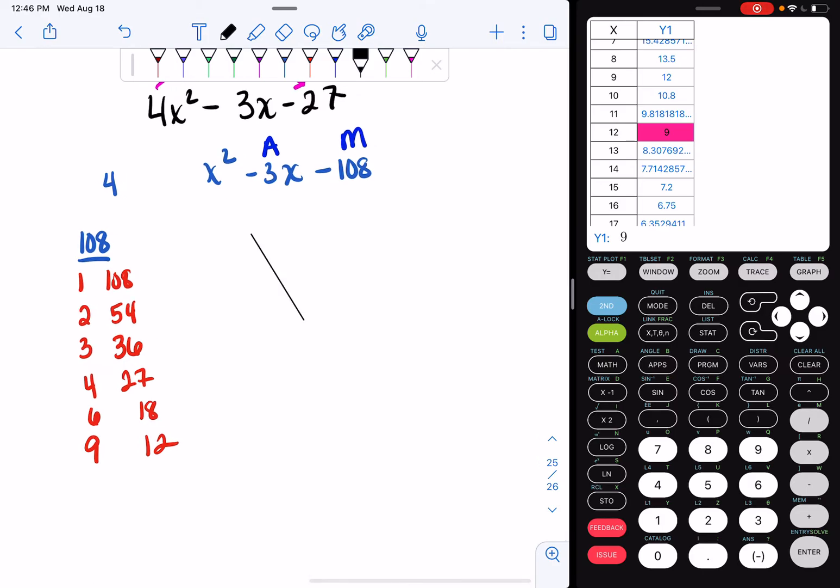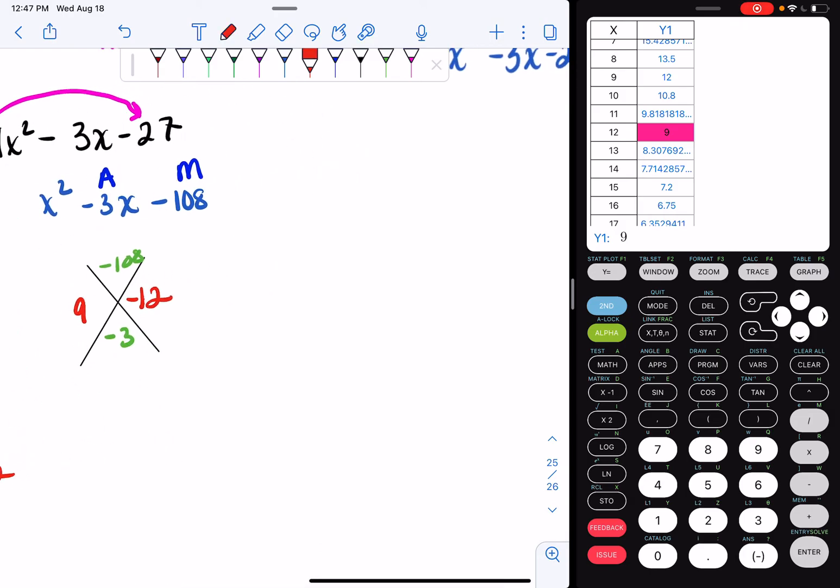Now what I do is I go to my diamond and I want to multiply to negative 108 and add up to negative 3. If I go through all these pairs, I'm going to end up finding out that my 9 and 12 work. So I'm going to put my 9 in here and my 12 here. I want a negative, so one of them has to be a negative. So I'm going to make my 9 negative. Negative 9 plus 12 is not negative 3, it's a positive 3. So now I'm going to make my 12 negative. 9 times negative 12 is negative 108. 9 plus negative 12 is negative 3. So my factors are x plus 9, x minus 12.